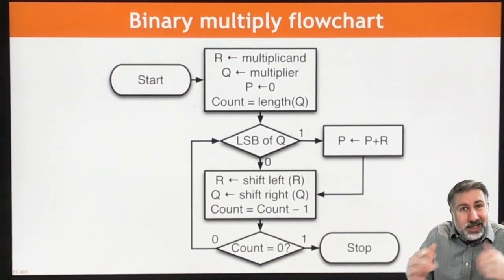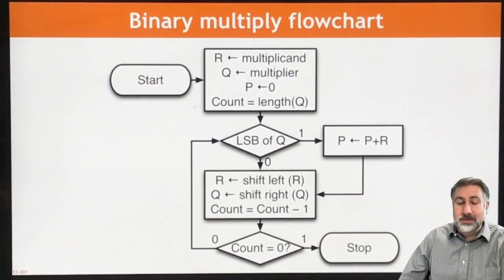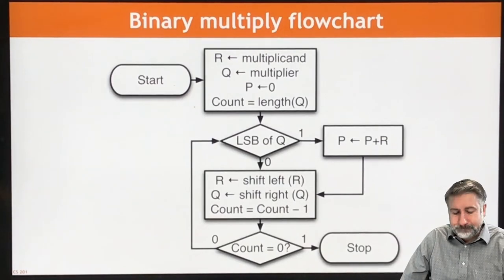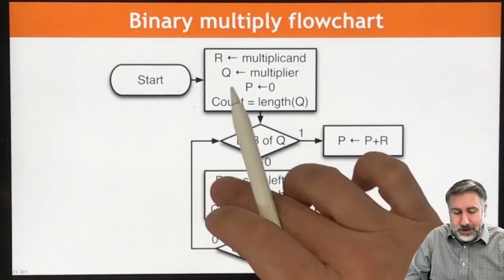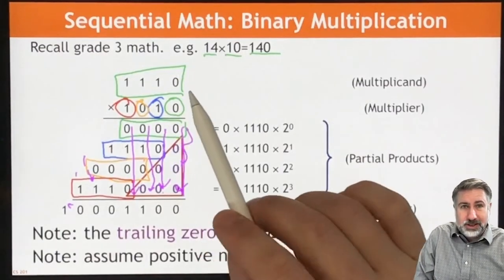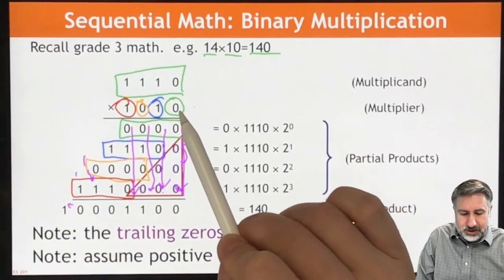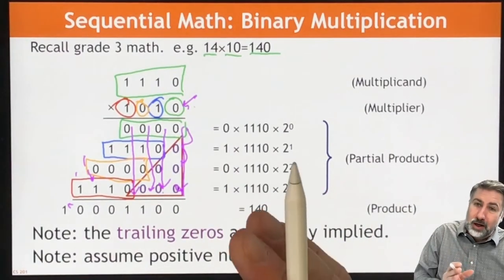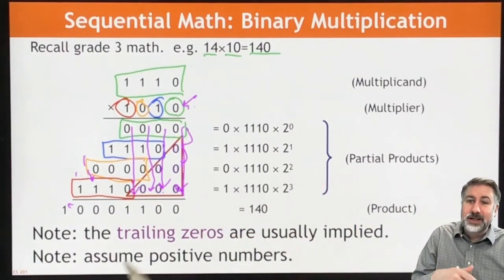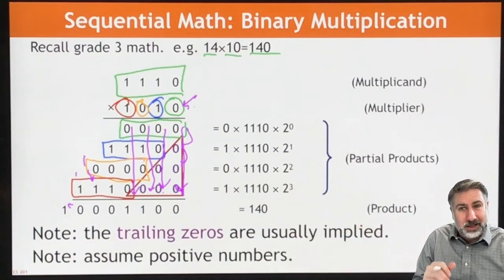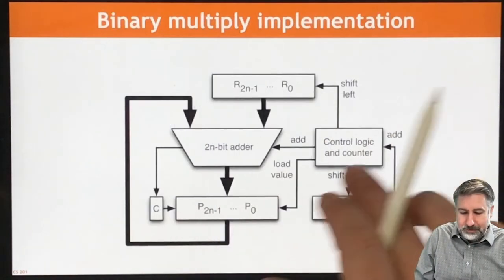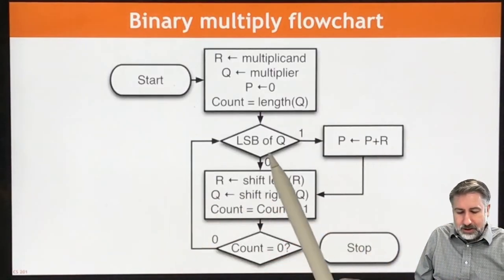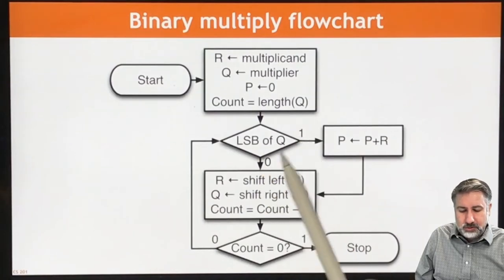We could do this with different sizes of multiplicand and multipliers, but for simplicity we'll keep them the same size. Then we check the least significant bit of Q — that's the first bit in our process. We check the least significant bit of Q and ask: is this a zero or a one? If it's a one, we're going to add the multiplicand. If it's a zero, we're not going to add the multiplicand.